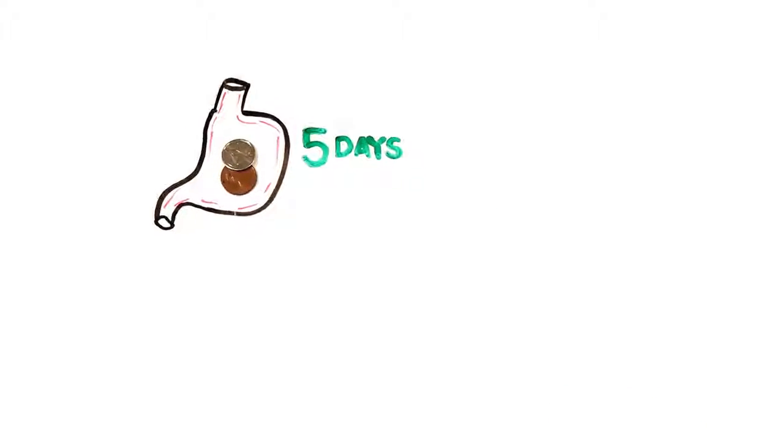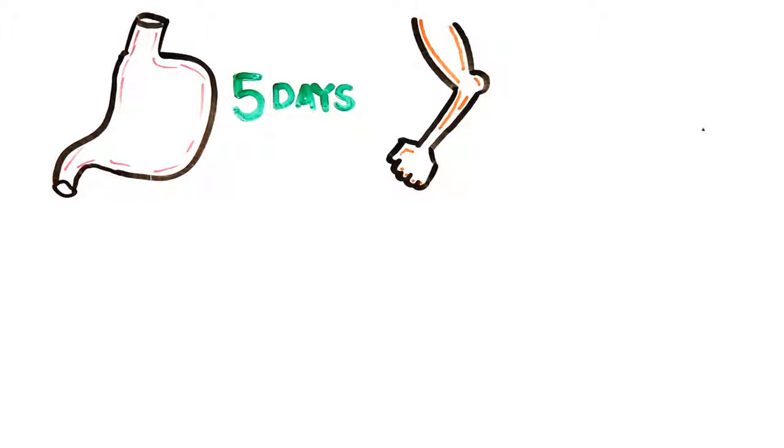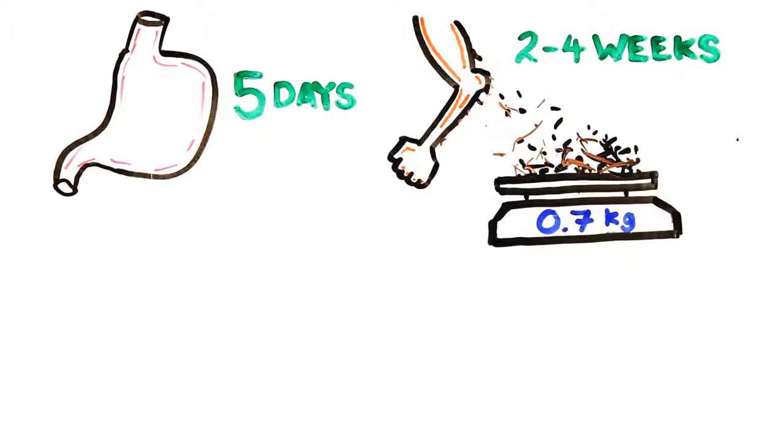The cells that line your stomach regenerate every 5 days, which makes sense as stomach acid can dissolve metal. Your skin's outer layer, known as the epidermis, is shed every 2 to 4 weeks, meaning after one year you'll shed roughly 0.7 kilograms of dead skin.